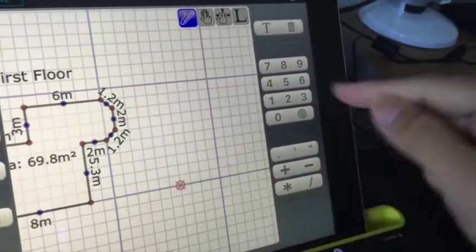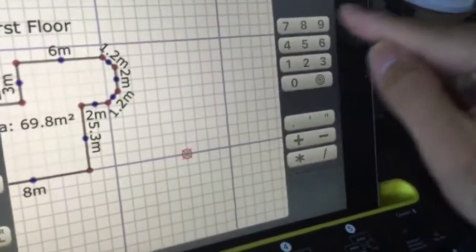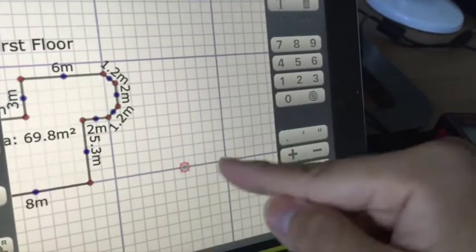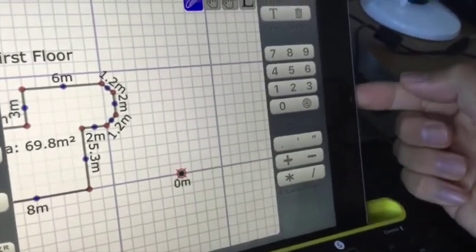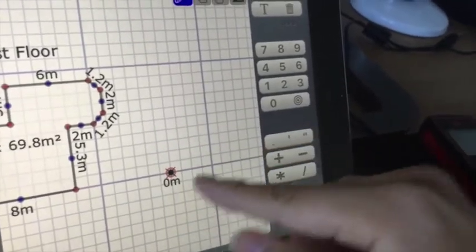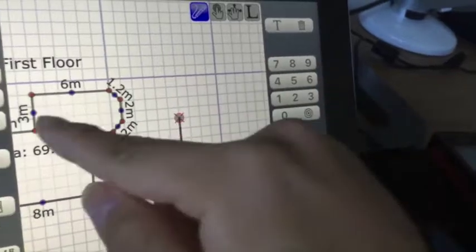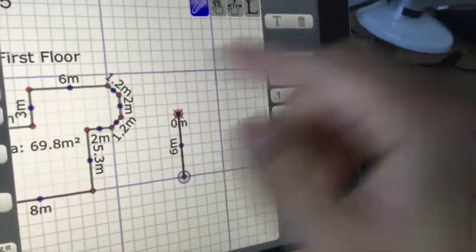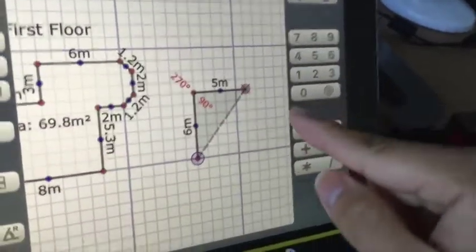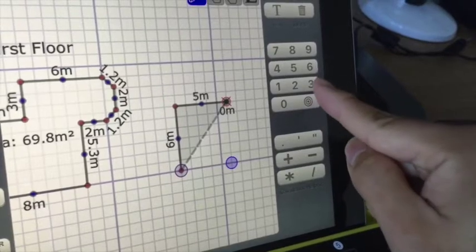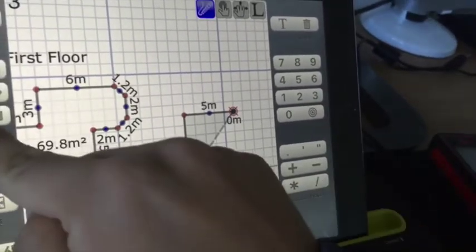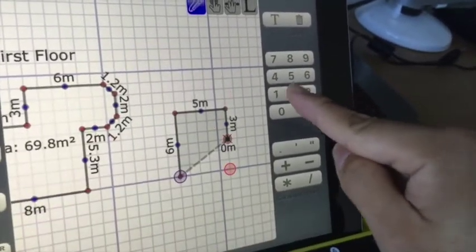Alright, so upper floor. Let's say six meters. Oh, that's because I forgot to press this button, so you press this button. Six meters, go up. Five meters, go to the right. Three meters, two meters.